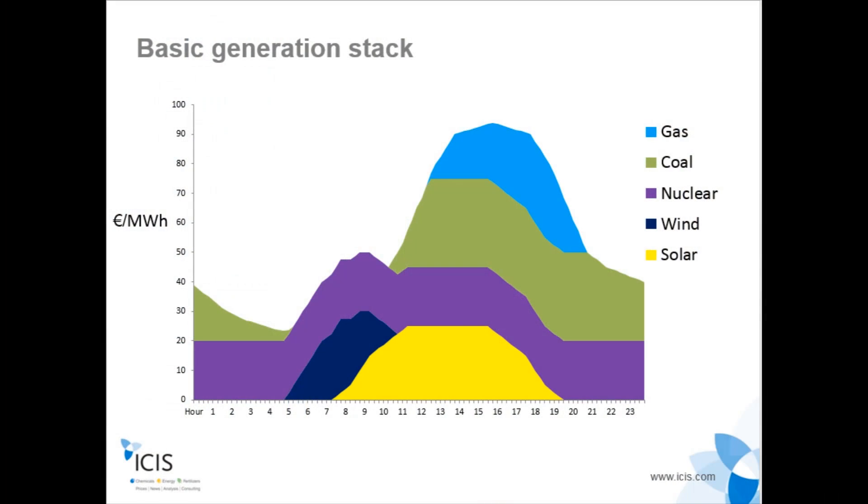We then come up towards the fossil fuels, which are slightly higher up what we call the generation stack. Typically, at the moment in Europe, coal is a cheaper form of power generation — it's cheaper to burn coal to generate power than it is to burn gas. So as demand starts to pick up, we've got our nuclear plants running along with wind and solar, and then we have to fire up coal plants to meet increasing demand. The operators of these coal plants pay a certain amount for the coal they burn, so they have to charge an amount for their electricity output that makes it economic to run their plants. This is why the wholesale power price mimics movements within the coal market — as coal gets more expensive, electricity has to become more expensive.